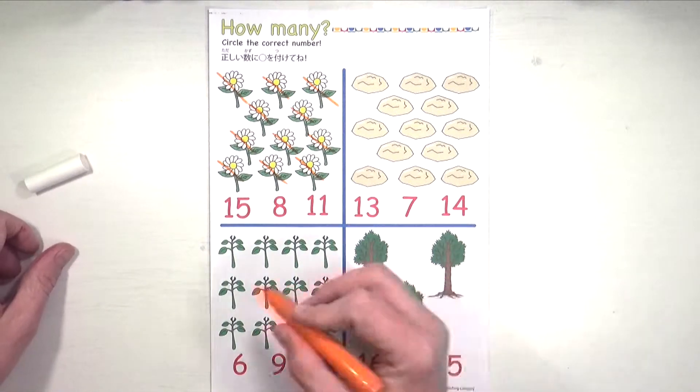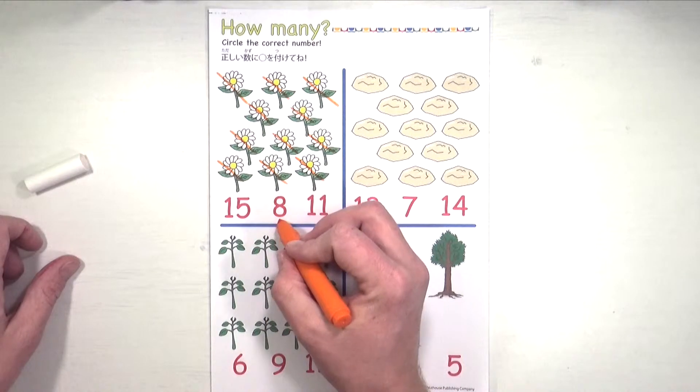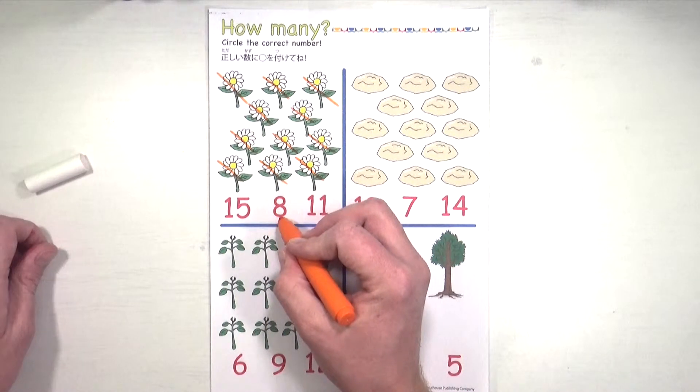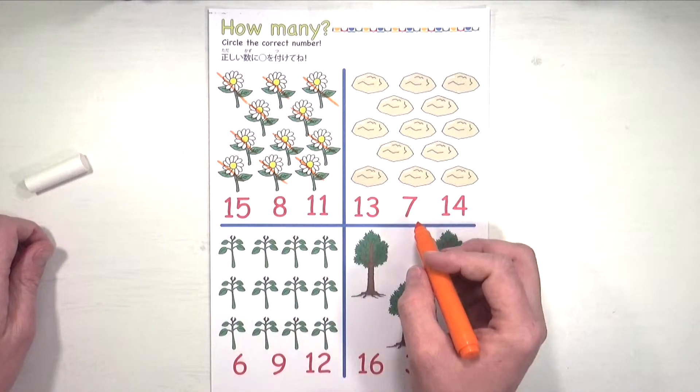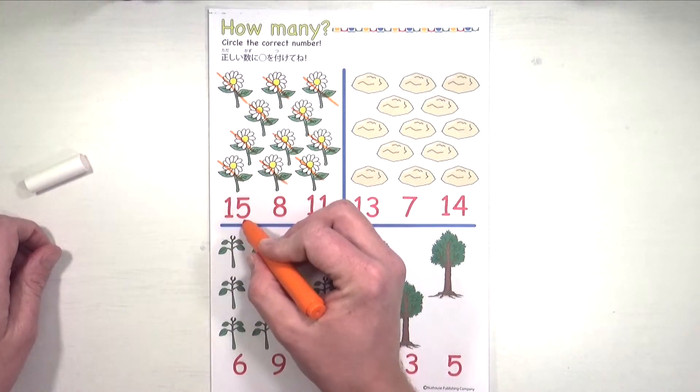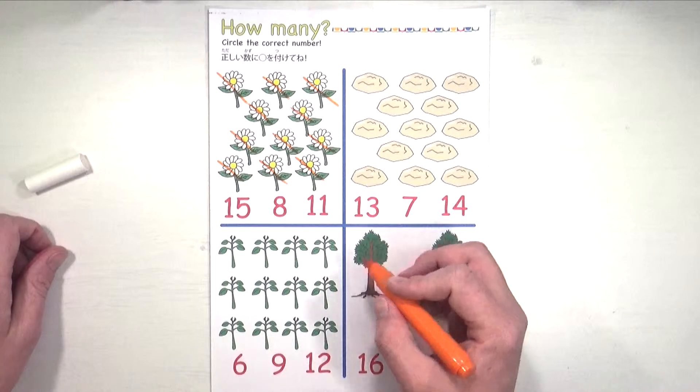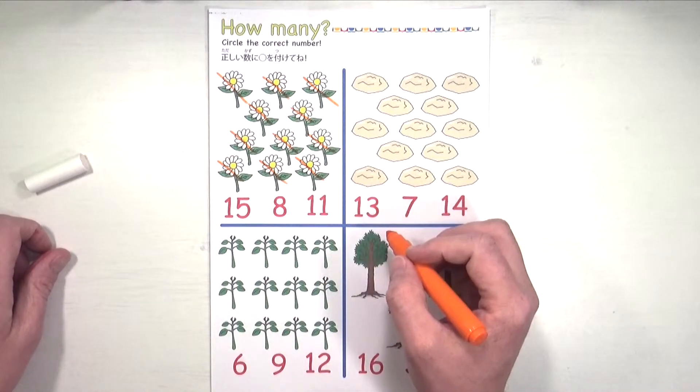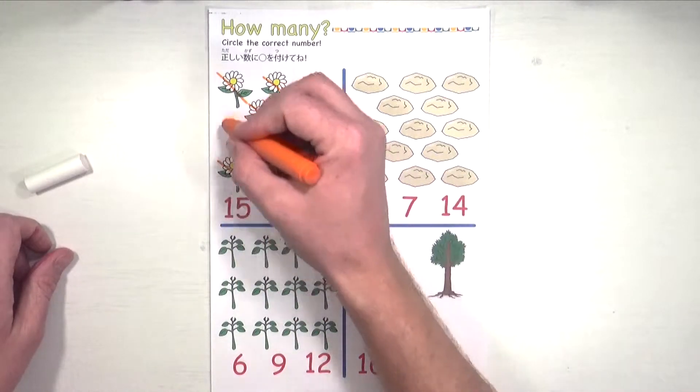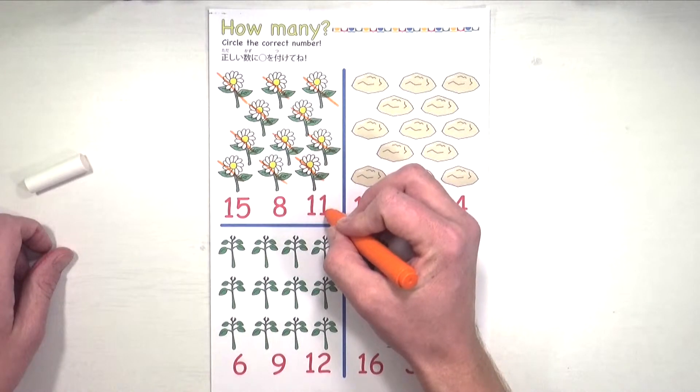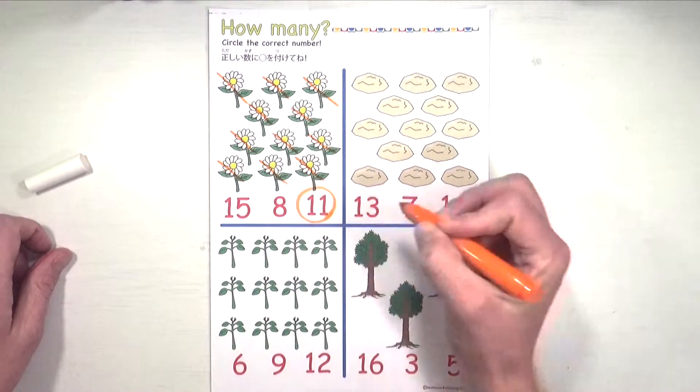All right. Which number matches 11? Is it this one? No, that's eight. So it's one of these two. Well, what number is a one and a five? That one's fifteen. How about a one and a one? Yes, eleven. So there are eleven flowers and this is eleven. Let's circle. Good job.